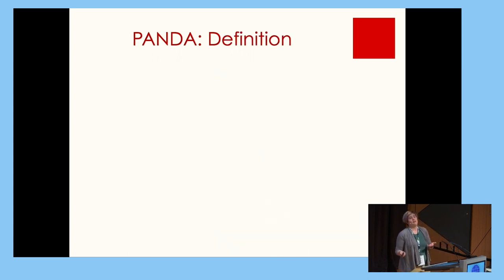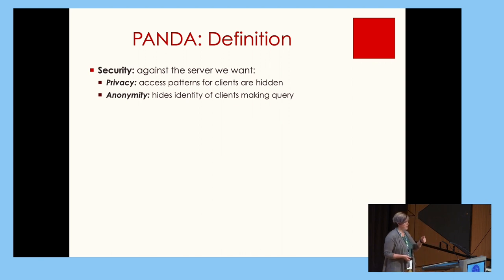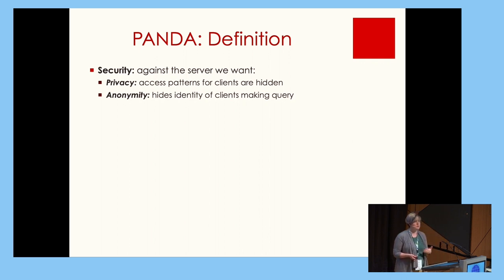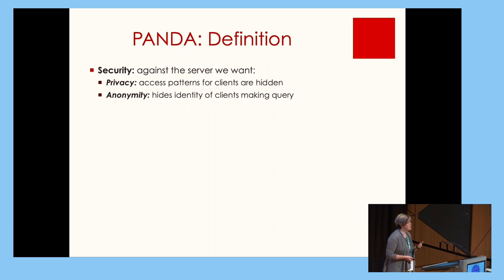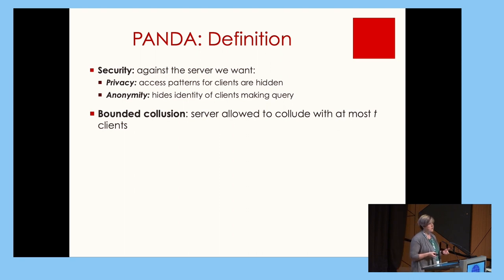Now that we've established the syntax, let's talk about what we want in this definition. As mentioned in our motivating example, we want security against a server who may be trying to learn the client's queries and their identities — namely, privacy of access patterns against the server. We also want anonymity of the clients' identities, meaning the server cannot cross-correlate client identities between different queries. We want this not only against a server observing interactions, but also against a server allowed to collude with some number of clients.